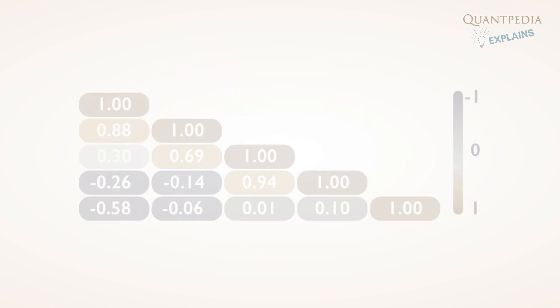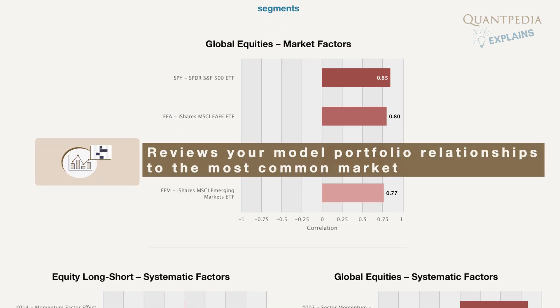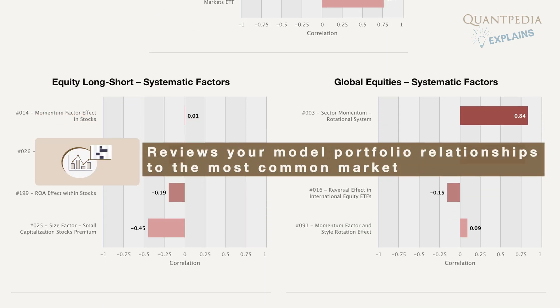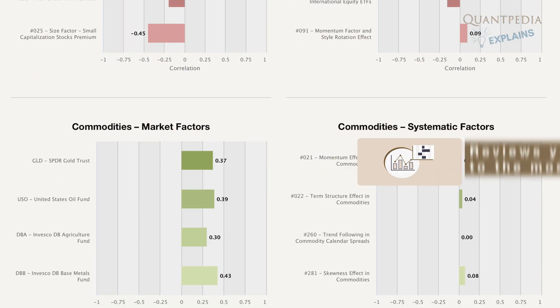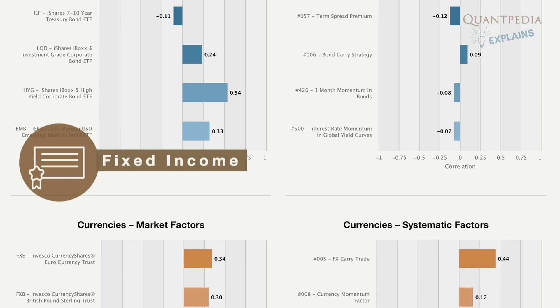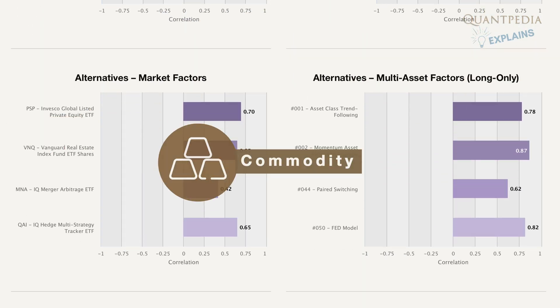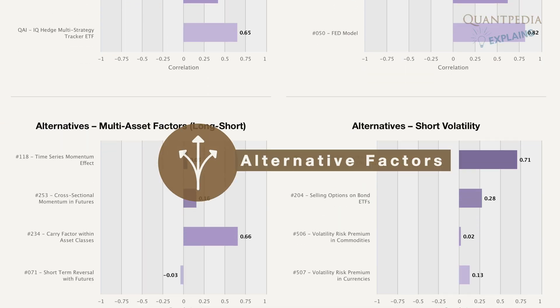The correlation analysis report reviews your model portfolio's relationships to the most common market and systematic equity, fixed income, currency, commodity, and alternative factors.